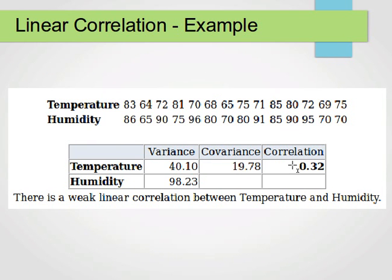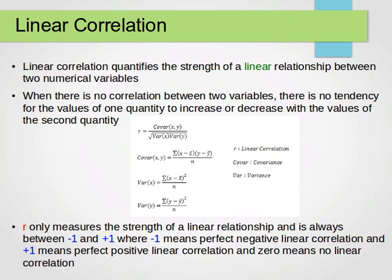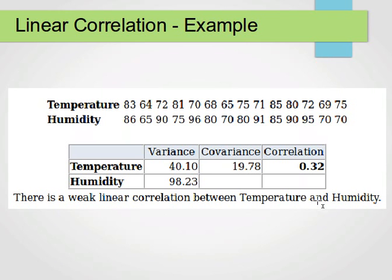After computing the covariance, we compute the correlation r, which comes out to 0.31. Remember: r is always between -1 and +1, where +1 is perfect positive, 0 is no correlation, and -1 is perfect negative. A value of 0.31 is positive but not very strong, indicating a weak positive linear correlation between temperature and humidity — meaning when temperature increases, humidity tends to increase to some extent, but not always.